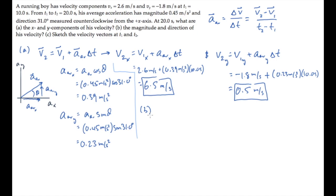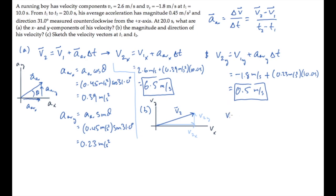Part B asks for the magnitude and direction of the velocity at the second time. We can plot these components that we just found: 6.5 meters per second in the x direction and 0.5 meters per second in the y direction, to see that this is the final velocity vector, v2. Find its magnitude using the Pythagorean theorem — sum the squares of the components and take the square root.